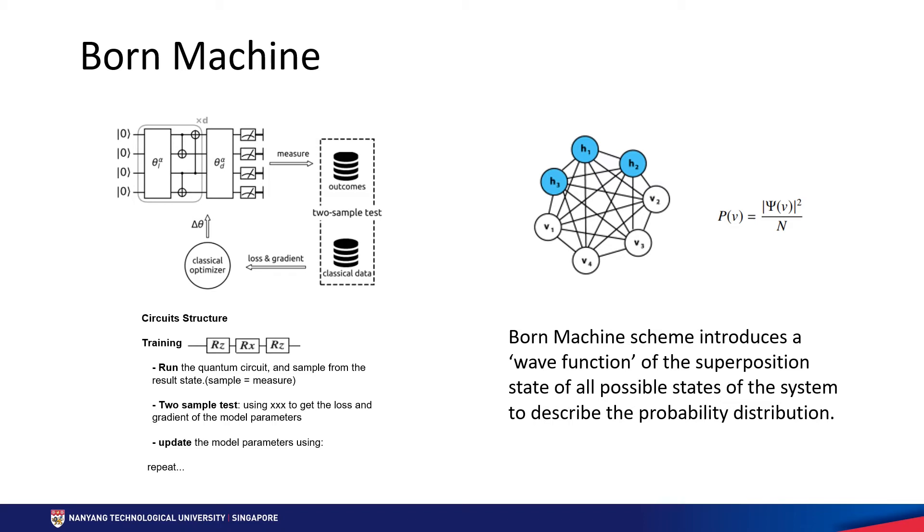Second, state measurement: put rotating angle into a quantum circuit and get the corresponding state, then operate a measurement on the state. Third, sampling: repeat step 2 and get the possibility distribution of results.